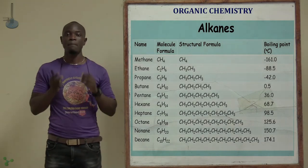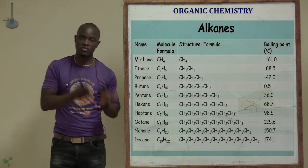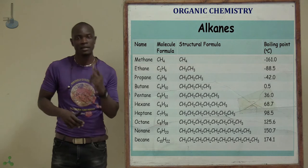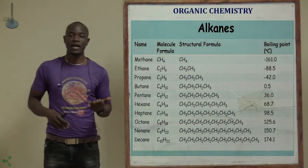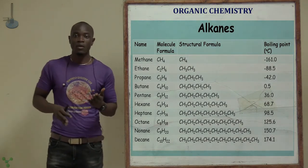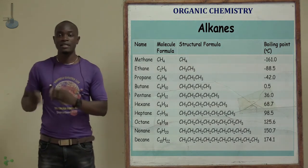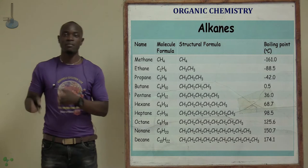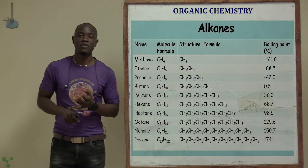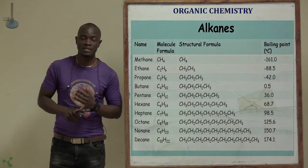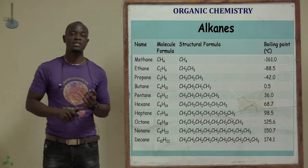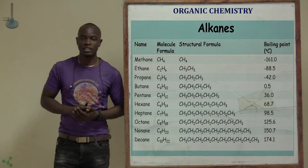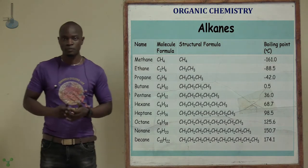Methane is the most flammable because it only has one carbon atom and four hydrogens, while decane is the least flammable. Decane is not a gas — it's a liquid — and its formula is C10H22.